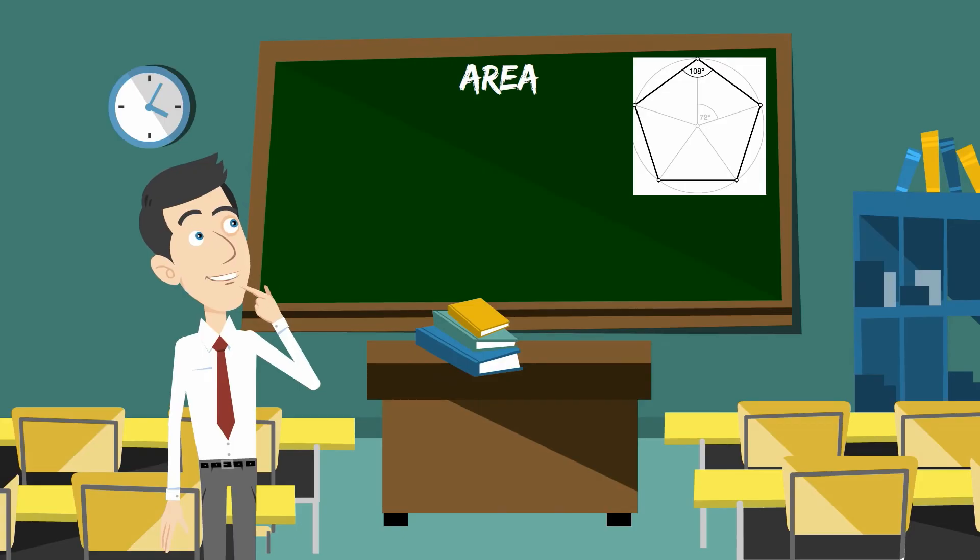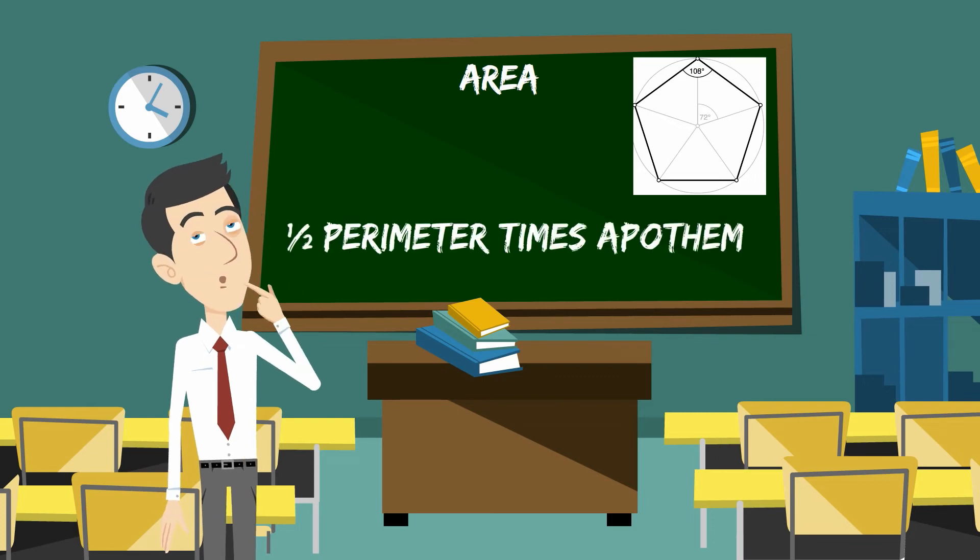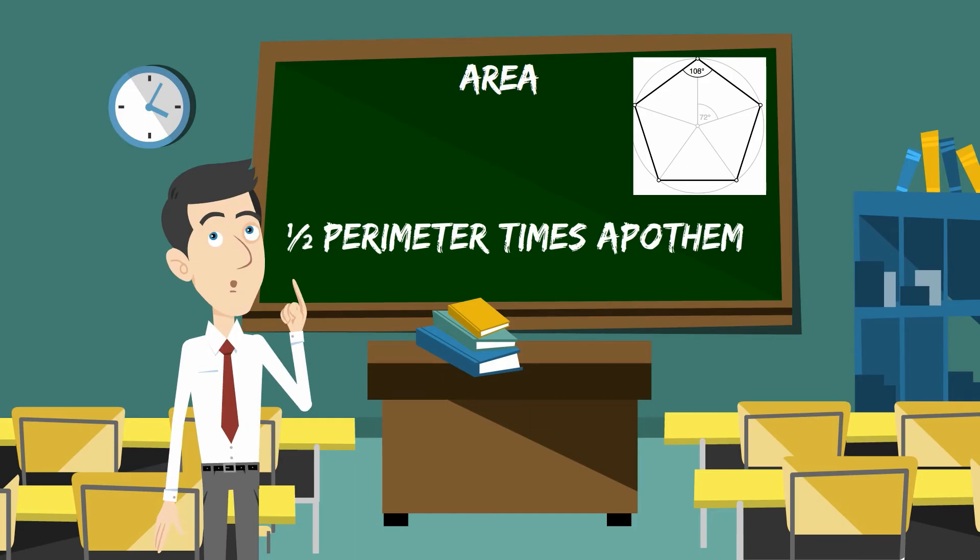You can find the area of a pentagon if the apothem is known by just taking 1 half perimeter times the apothem. If you don't know the apothem length.